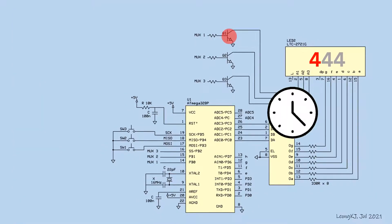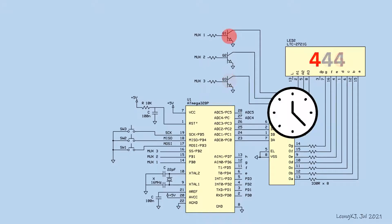The timer provides the timing for the multiplexing operation, and dpDigit cycles back to the first digit again.